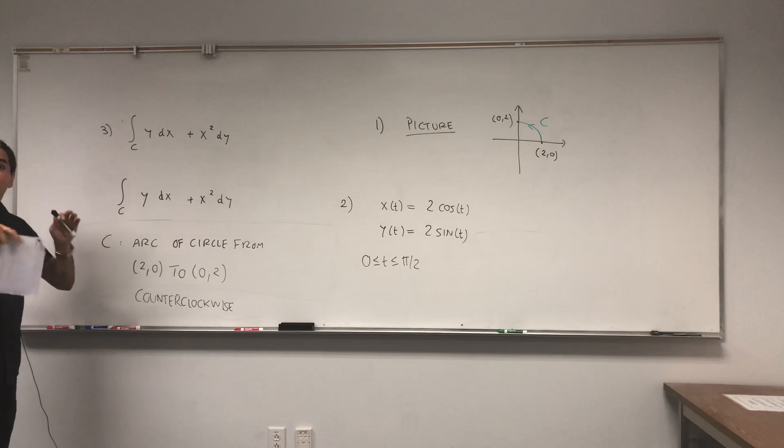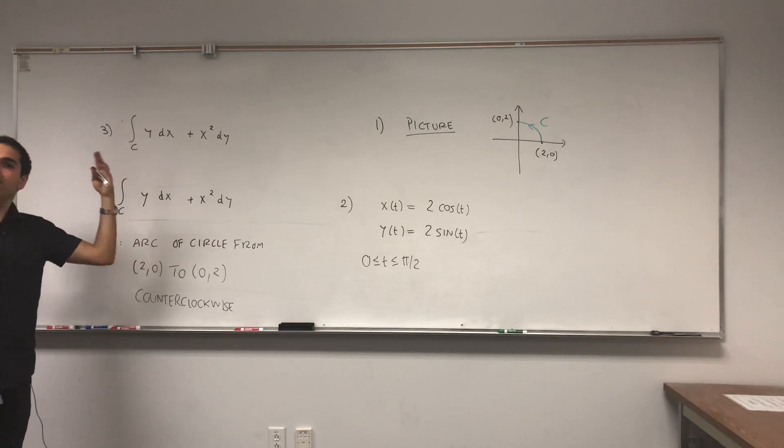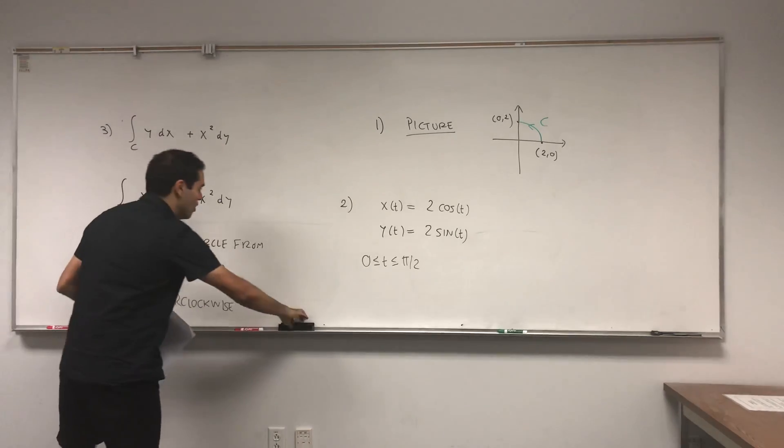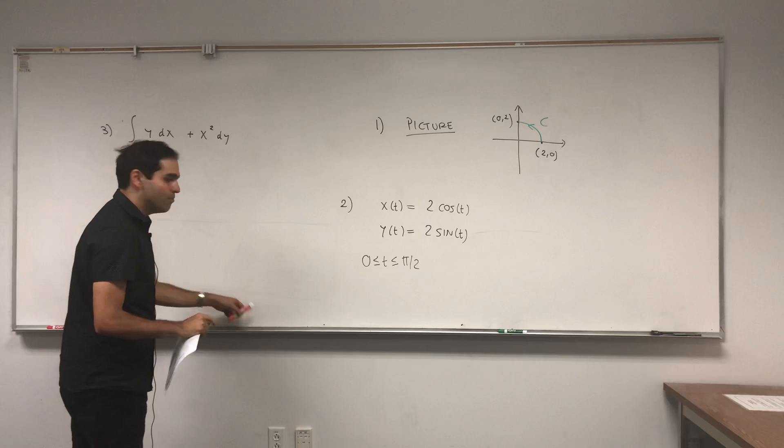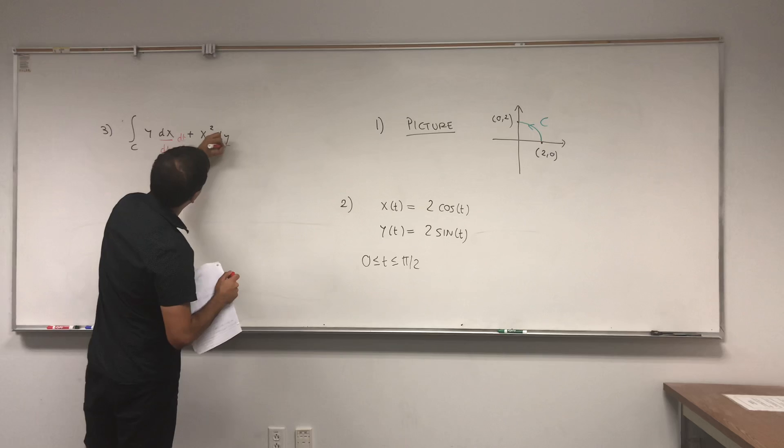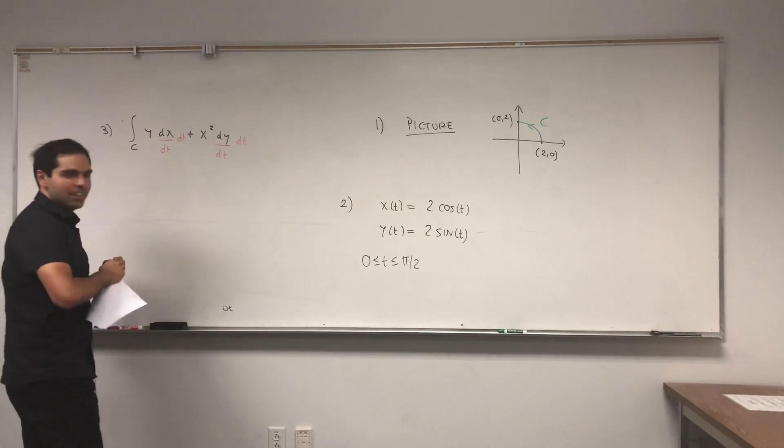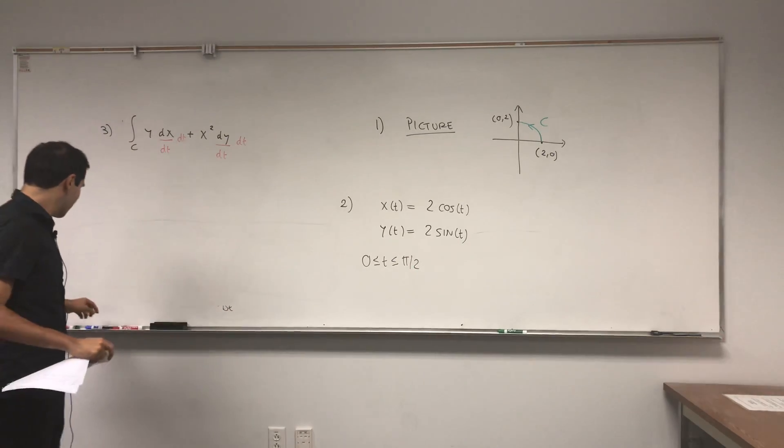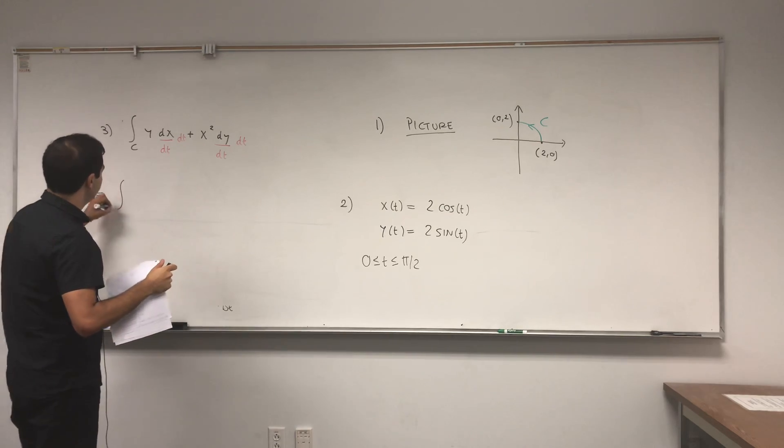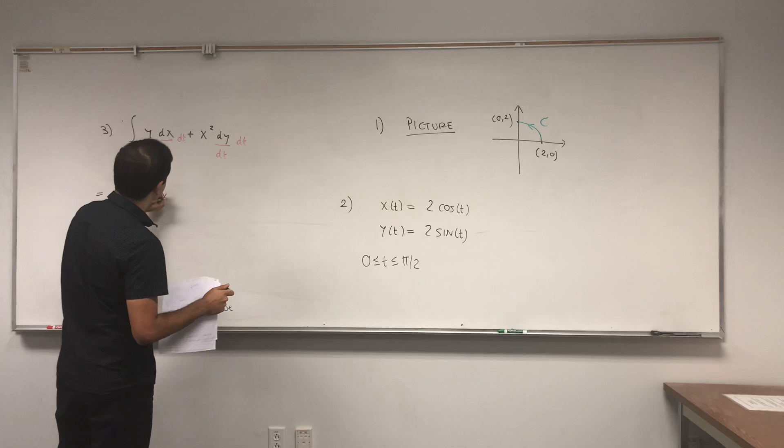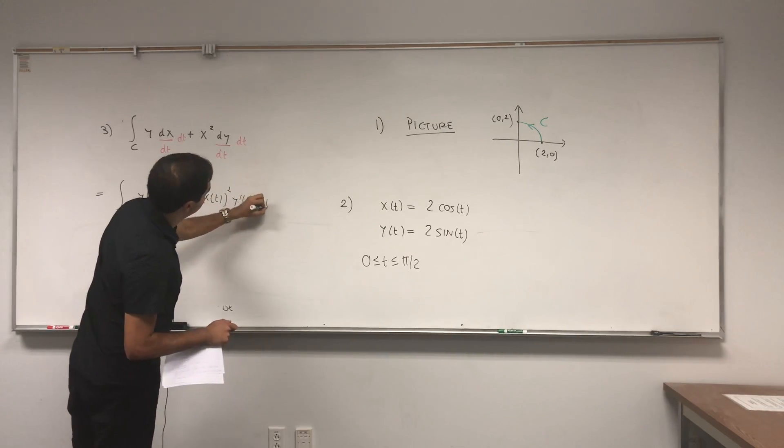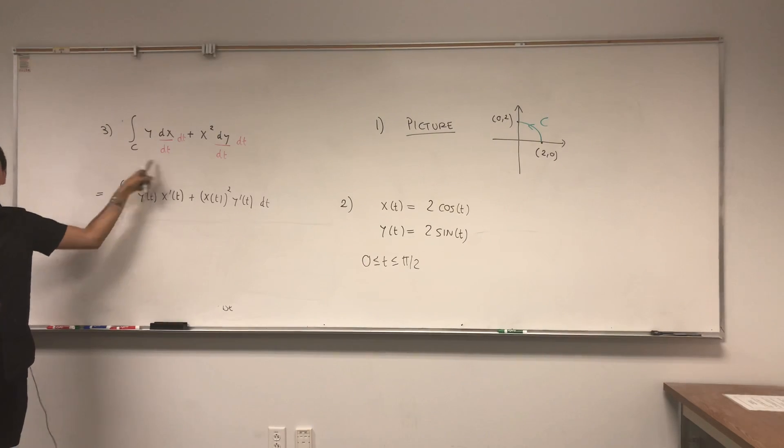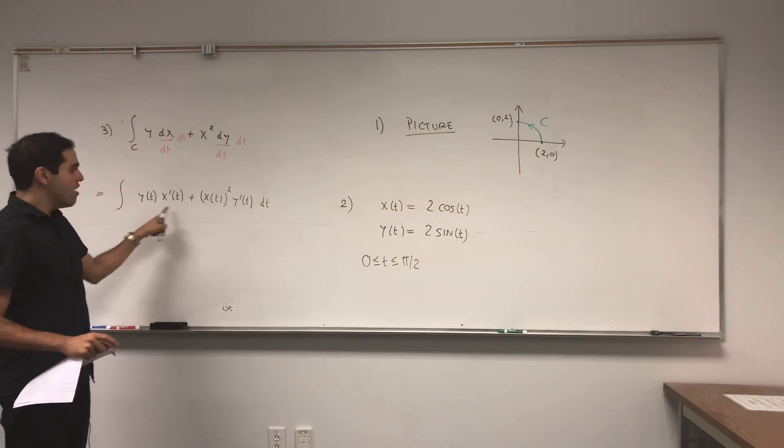Again, we don't know what this means, but what helped us last time with line integrals of functions over curves was indeed the chain rule. Namely, what helped us is that we wrote dx as dx over dt times dt. So let's just do this again: dx over dt times dt and dy over dt times dt.